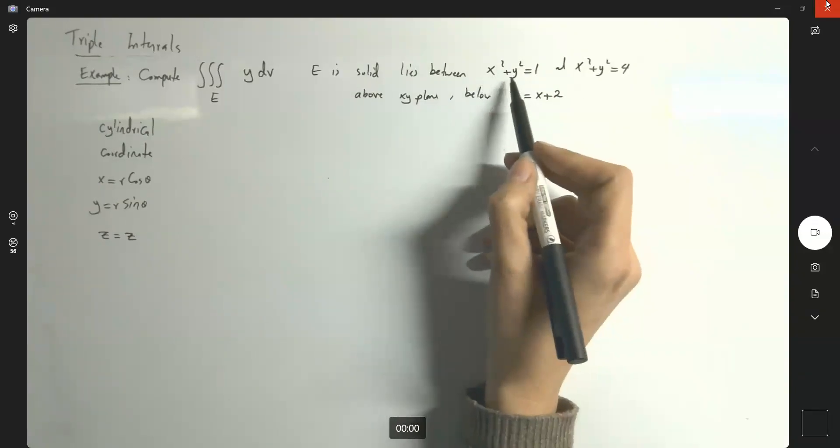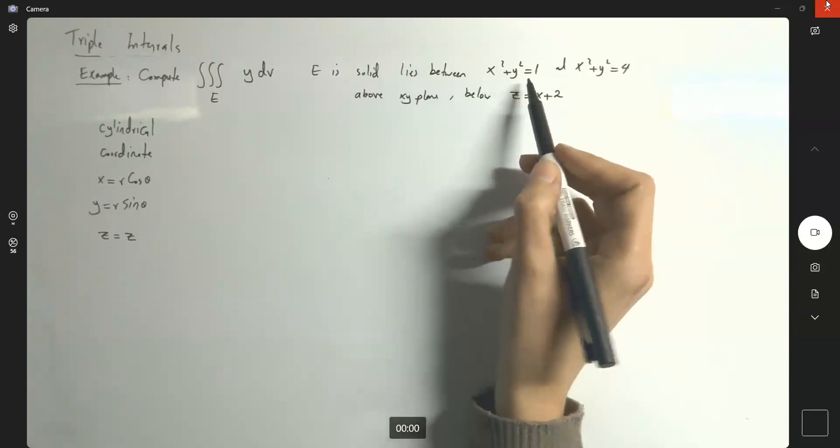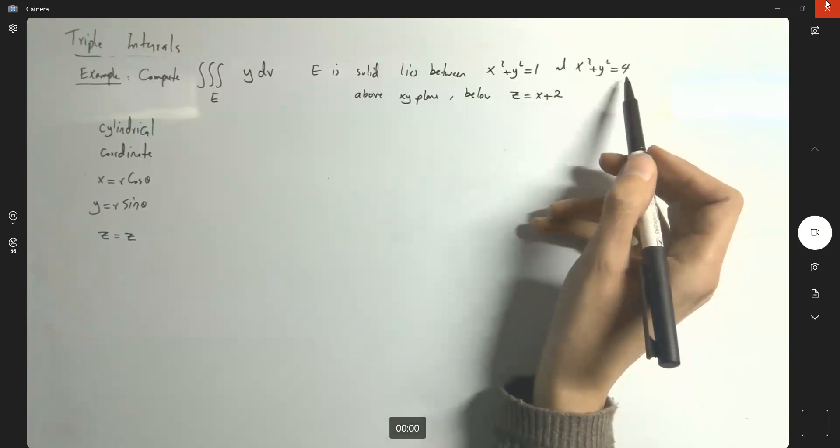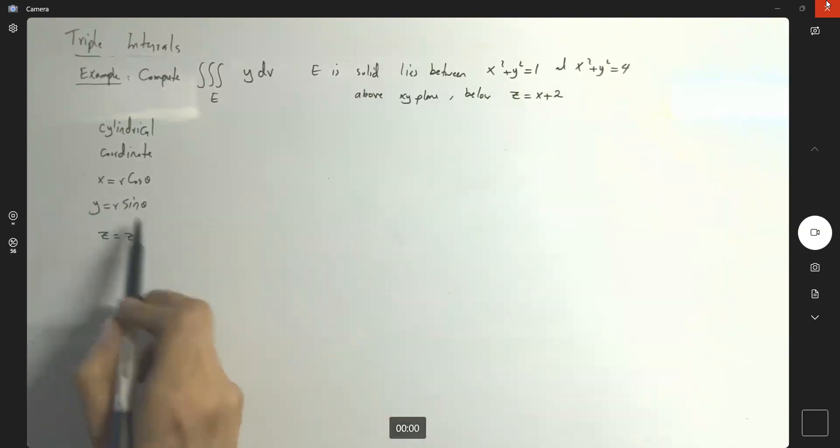So if it was x squared plus z squared equals 1, and this guy was x squared plus z squared equals 4, then y is going to be the axis of symmetry. So you're going to keep y as it is.